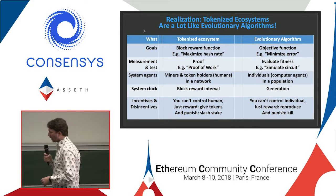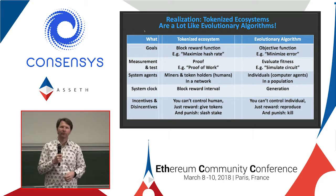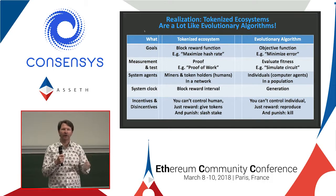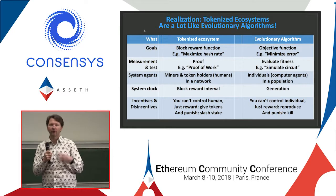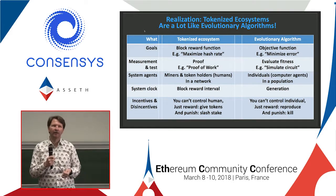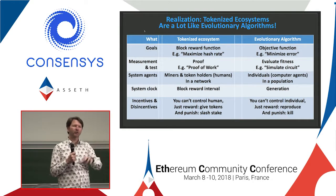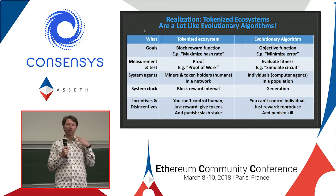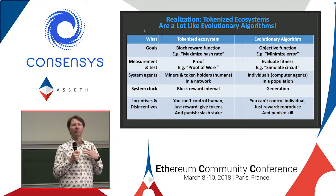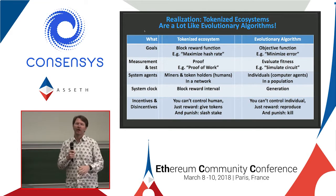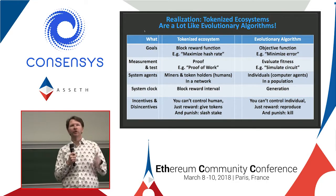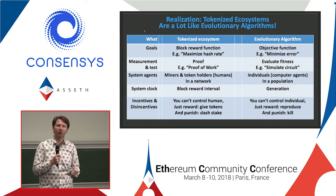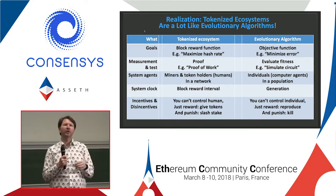Around the same time, I started to realize tokenized ecosystems are a lot like evolutionary algorithms — and I had spent a lot of time in the world of AI, including evolutionary algorithms. Roughly speaking, an evolutionary algorithm is survival of the fittest: you have a bunch of individuals running around doing whatever they want, and every generation you kill off the worst 5% or 50%, let the other ones reproduce with some mutations and crossover. Over time, you converge towards an answer. They go back to the 60s, independently invented in three different places, and they're actually wildly powerful.